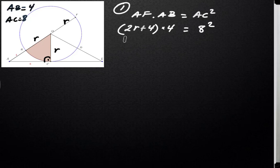So we just do the distribution here. 8r plus 16 is equal to 64. And 8r is equal to 64 minus 16. 8r will be 48. So we divide both sides by 8. We get r is equal to 48 over 8, which gives us 6 units.